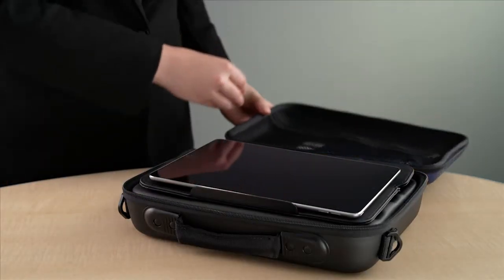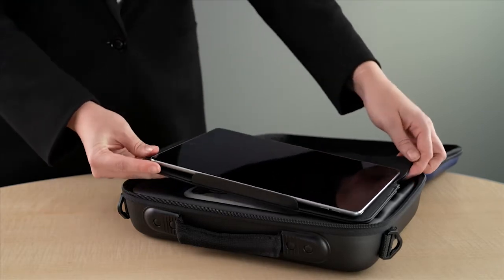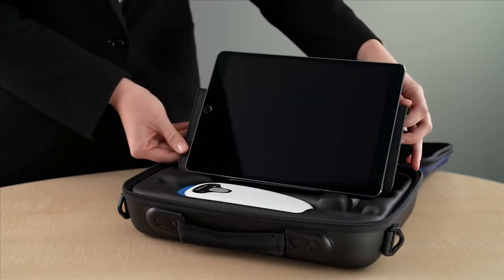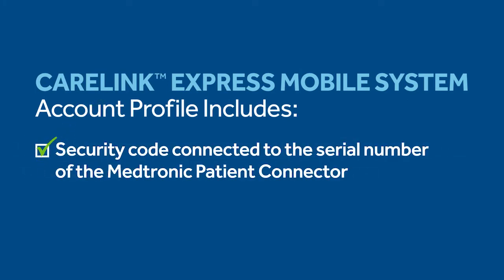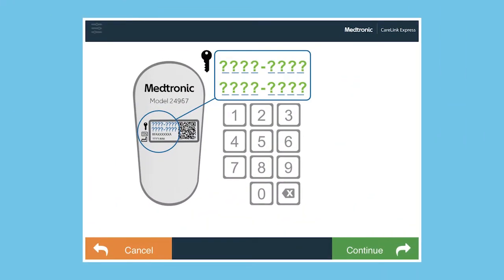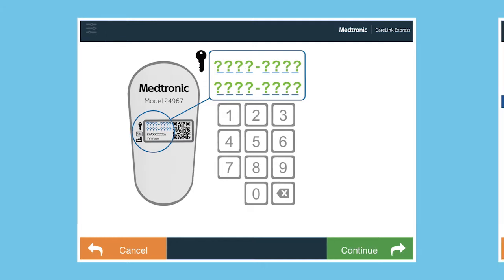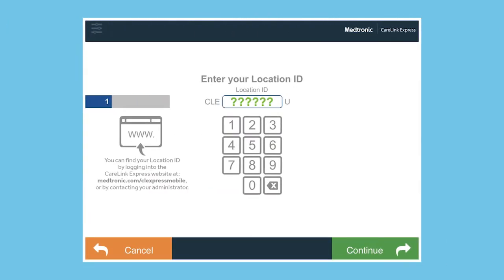Your Medtronic representative will set up an account profile for your CareLink Express Mobile system. This profile will include a security code connected to the serial number on the patient connector and a location ID number. The serial number and the security code are located on the back of the patient connector. Enter your Express location ID. The location ID can be found on your CareLink Express website or by contacting your local Medtronic representative.